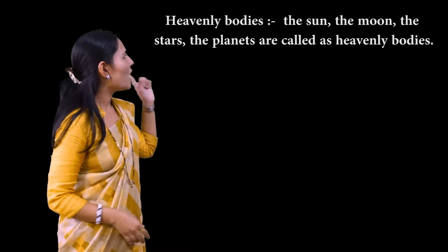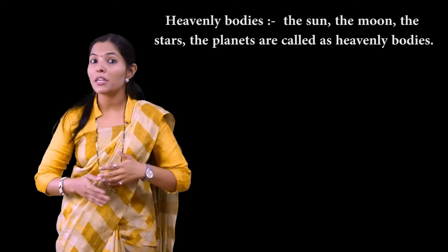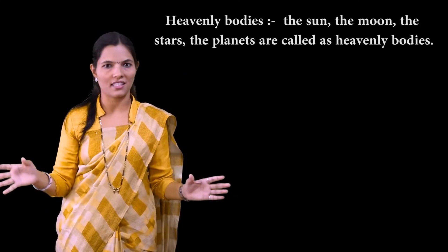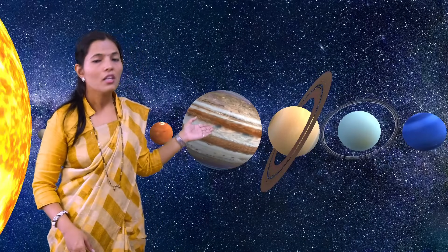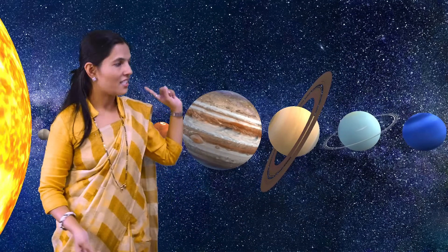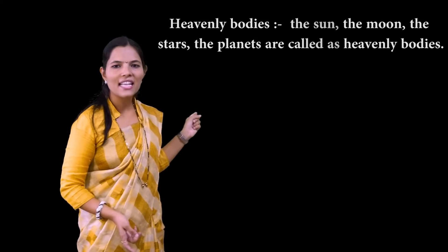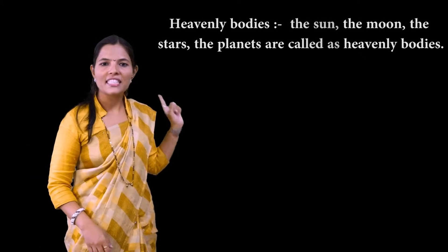The first topic is heavenly bodies. What are heavenly bodies? Heavenly bodies mean everything we see in the sky — the sun, the moon, the stars, and planets are all heavenly bodies.